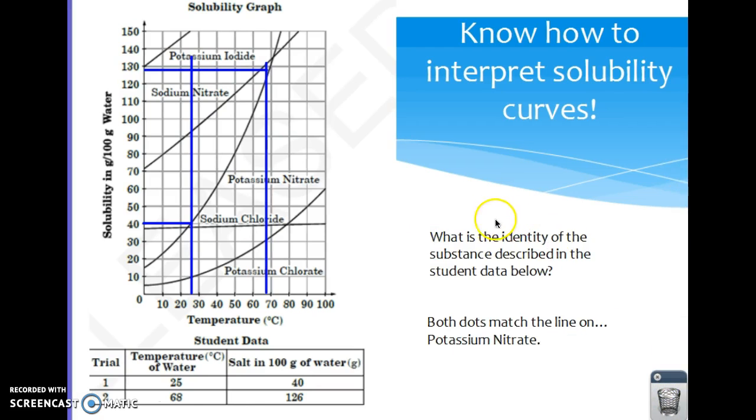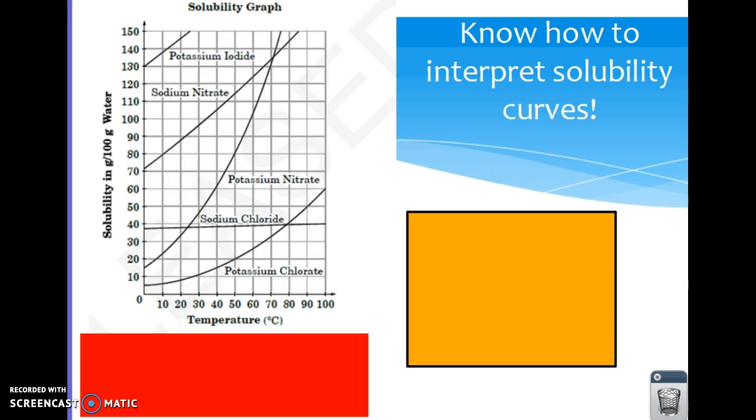Another skill that you might have to do with these graphs is determine whether something is saturated, supersaturated, or unsaturated. So for an example, if I put this dot right here, and I'm talking about sodium nitrate.